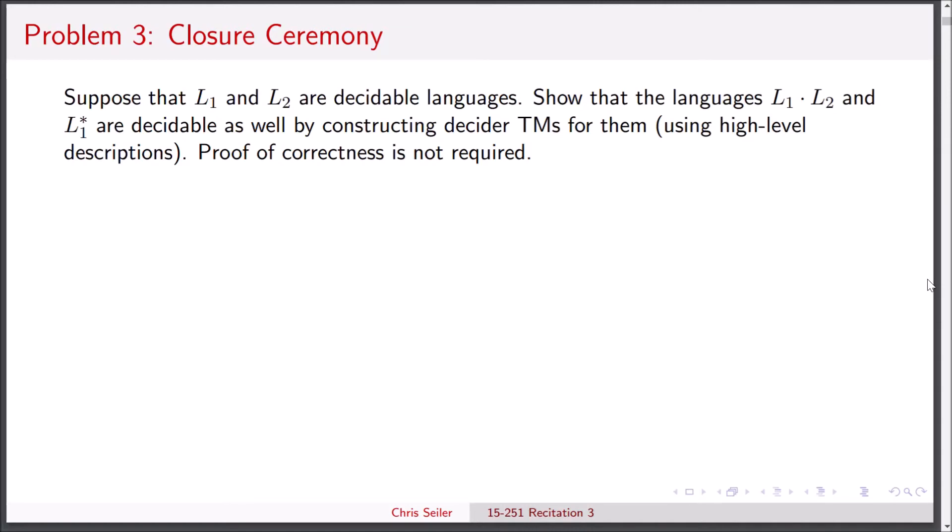This is recitation week three, problem number three, closure ceremony. Let's take a minute to read the problem statement. Suppose that L1 and L2 are decidable languages. Show that the languages L1 concatenate L2 and L1 star are decidable as well by constructing decider TMs for them using high level descriptions. Proof of correctness is not required.